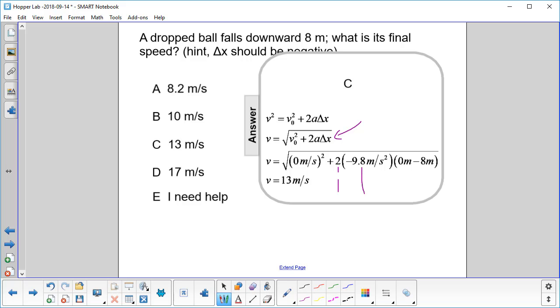The acceleration is a negative g, negative 9.8 meters per second squared. And then here's our delta X, which we said should be negative. And yes, it is. 0 minus 8 is negative 8.